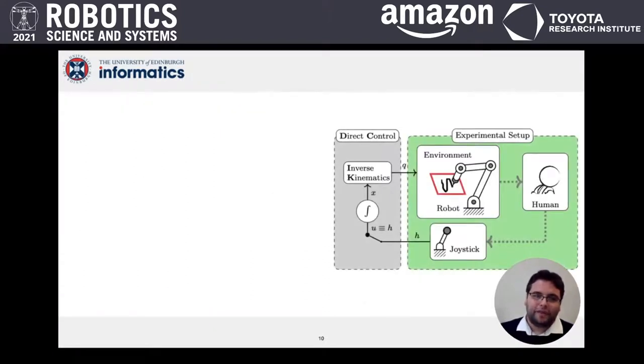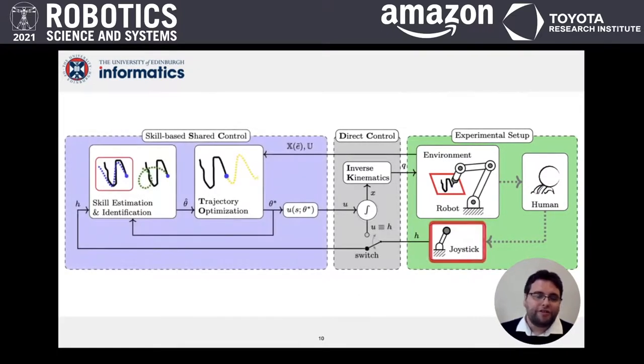Direct control maps joystick commands onto robot motions. Our proposed shared control framework tracks a window of interface signals and uses these to estimate the model parameters that describe the operator's intention.